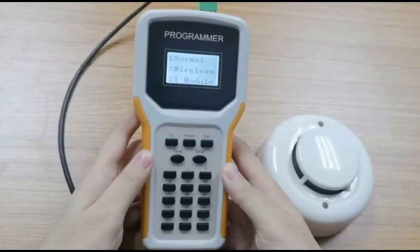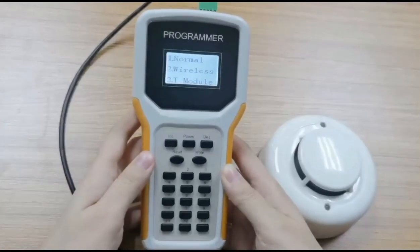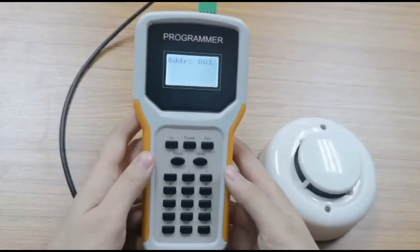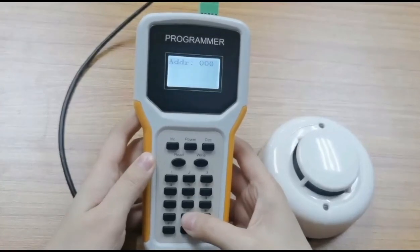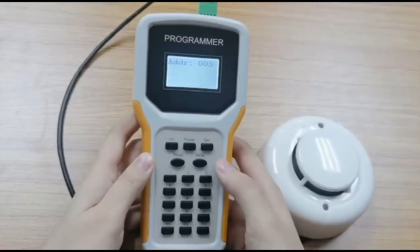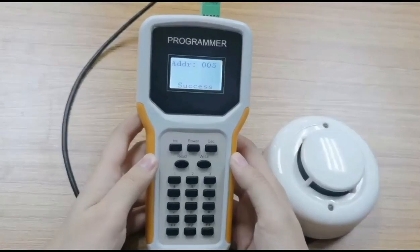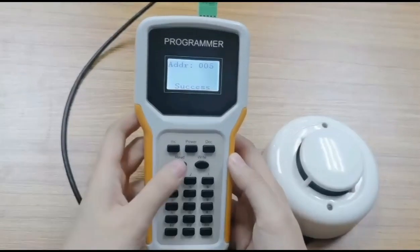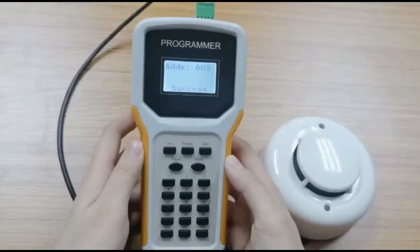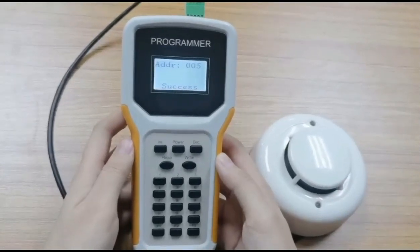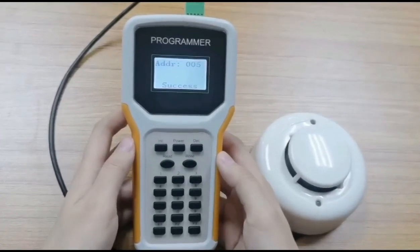After choosing number one, we can start to write the address. For example, we write zero zero five for this adjustable device, and then press the right button to confirm. You can check the address again by pressing the read button. Our system has up to 250 addresses in each group, so the maximum address is 250.